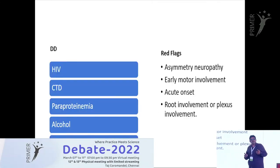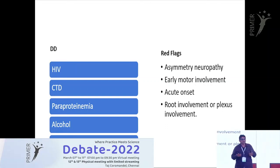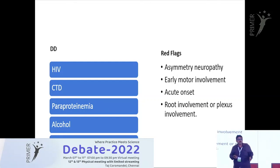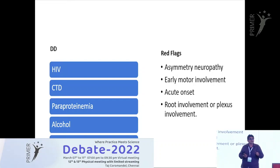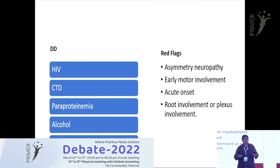Before determining whether the patient has typical sensory neuropathy of diabetes, we must consider that — just as in kidney disease there can be non-diabetic causes — in diabetic neuropathy there can be other contributing causes. Do basic blood tests and rule out HIV, connective tissue disorders, vasculitis, paraproteinemia (simple electrophoresis helps; incidence is about 40% per western literature), alcohol dependence, and renal failure. Also look for red flag signs suggesting something other than diabetes alone.